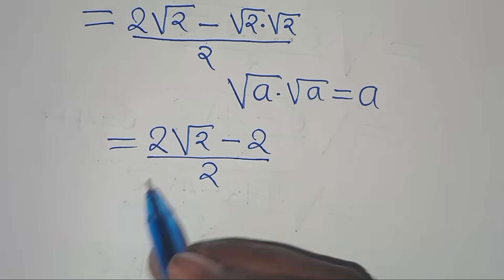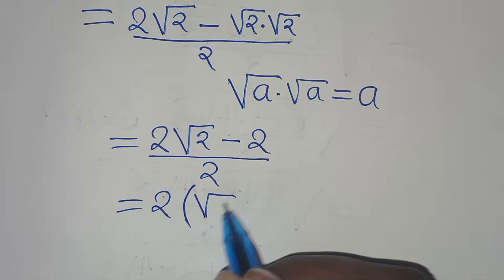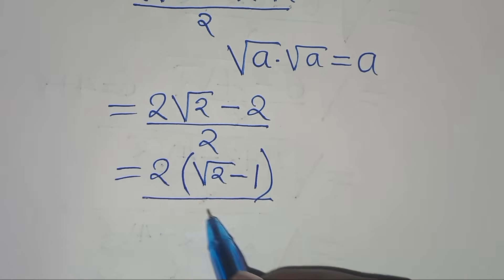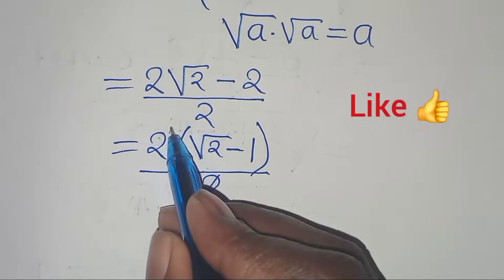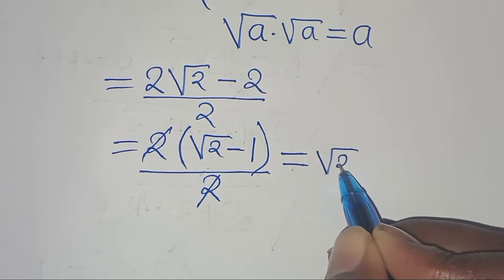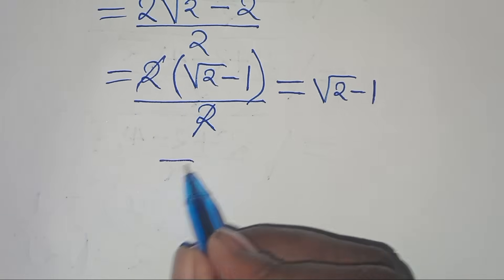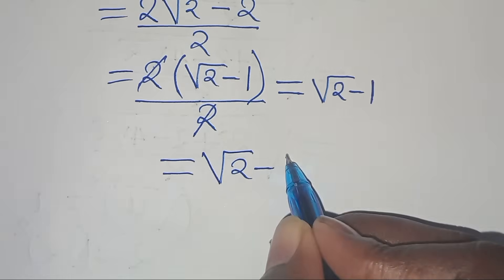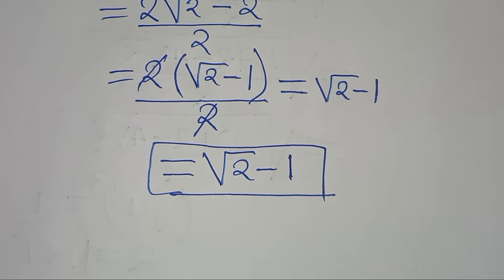So 2 is common here, we can factor out 2, so that into the parentheses we have the square root of 2 minus 1. This implies we have the square root of 2 minus 1. So this implies that the solution here is square root of 2 minus 1. This is the solution to this math problem.